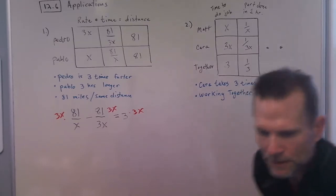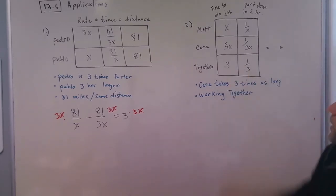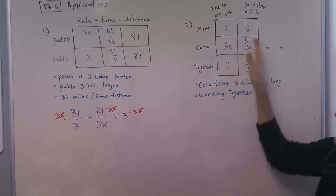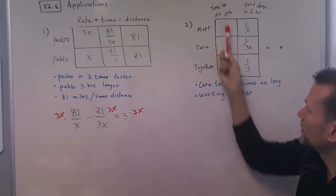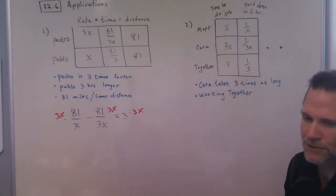Okay, then this is kind of a new type of problem for us here. You want to try to learn how to set up this table. You have the time to do the job listed in the first column and then the part done in one hour.